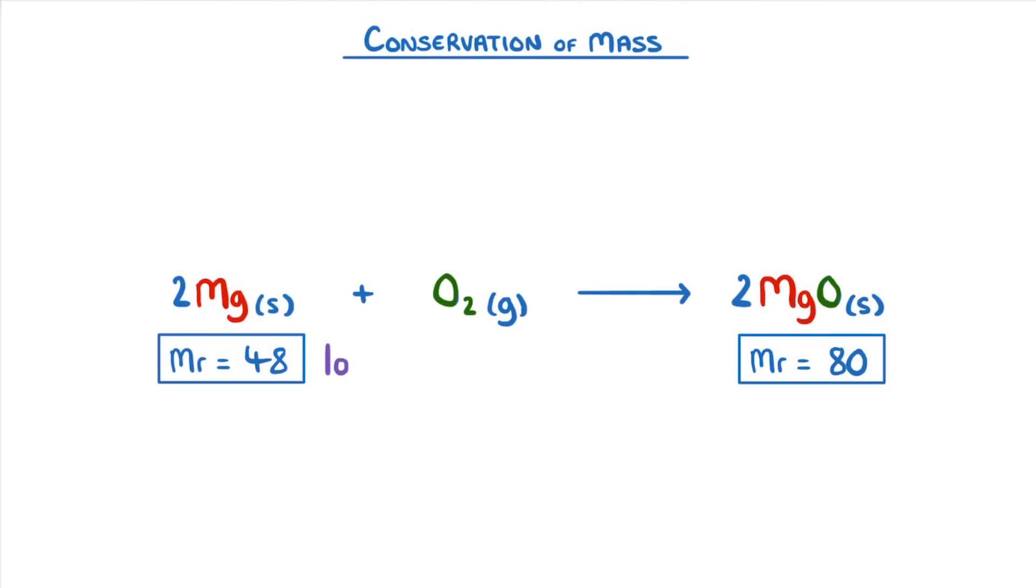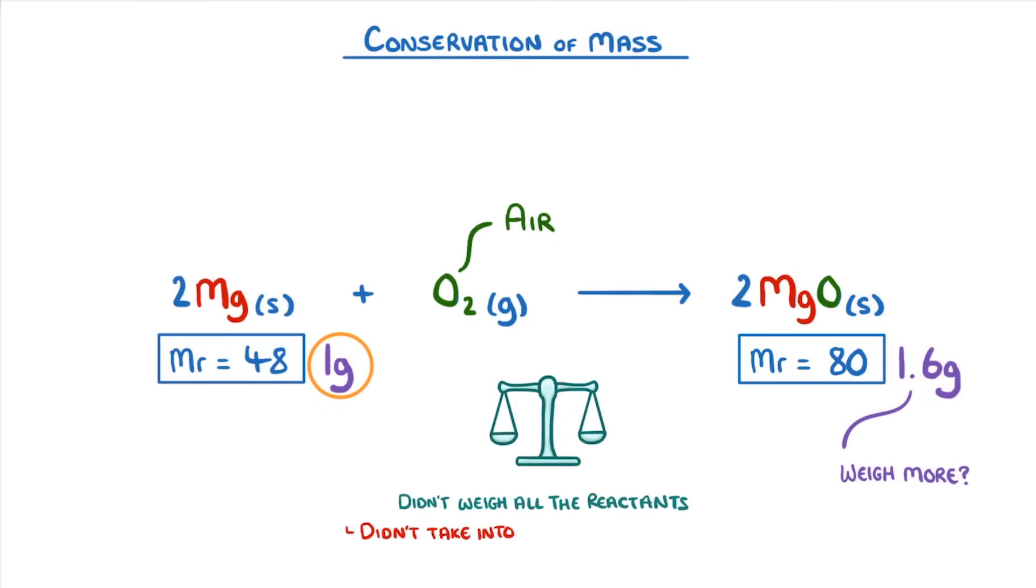For example, 1 gram of magnesium would go to form about 1.6 grams of magnesium oxide. So if the oxygen was just coming from the air around us, it would appear as if our product weighed more than our reactants. But really, our scales just didn't weigh all of the reactants, because they didn't take into account the oxygen.